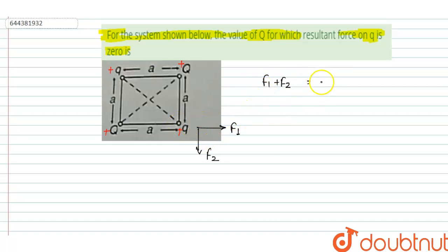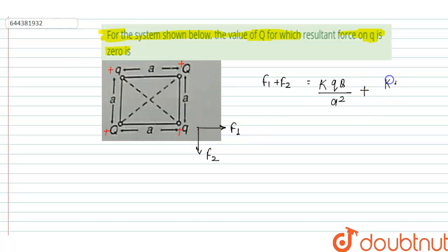The value of F1 is equal to k times small q times capital Q divided by a squared, where the distance between them is a. Similarly, the value of F2 equals k times q times capital Q upon a squared.